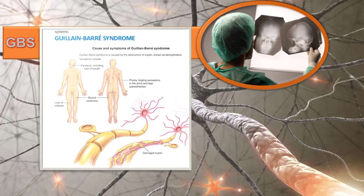The patient will either have plasmapheresis, which is the removal of circulating antibodies thought to be responsible for destroying the myelin, or they may receive IV immunoglobulin, which has been proven to be as effective as plasmapheresis.